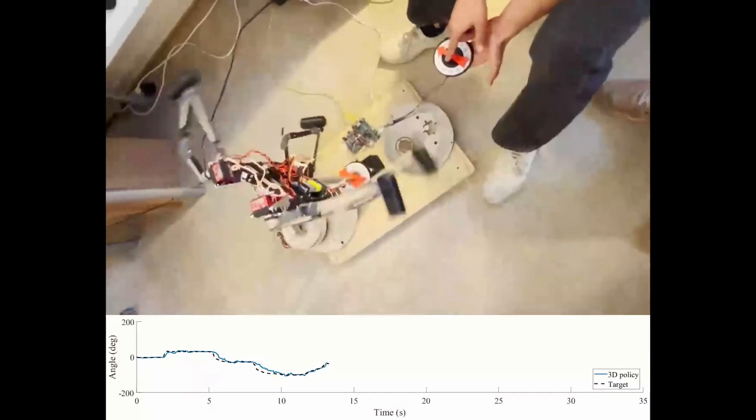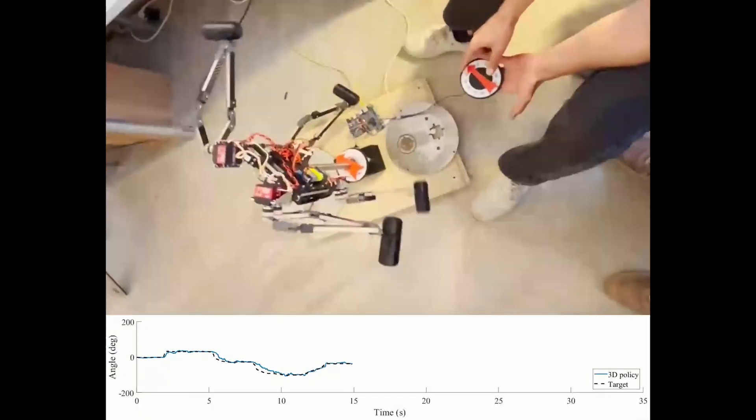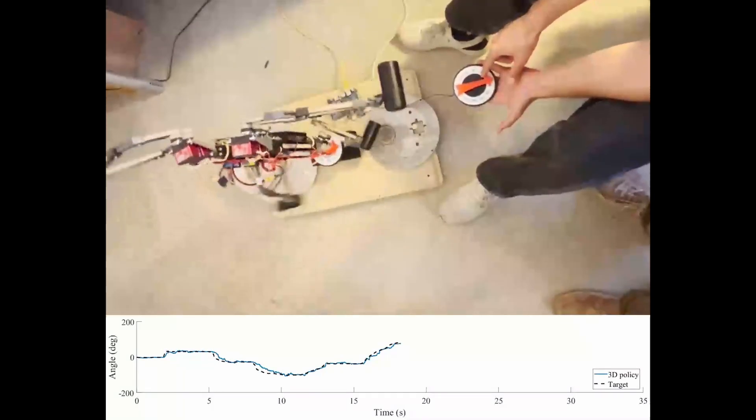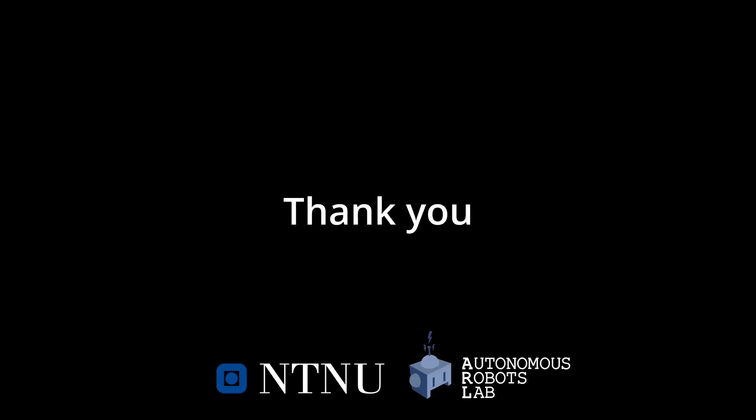The quadruped successfully follows the commanded angle indicating that the learned 3D policy is robust to the effects of the rotating pole. Thank you for watching.